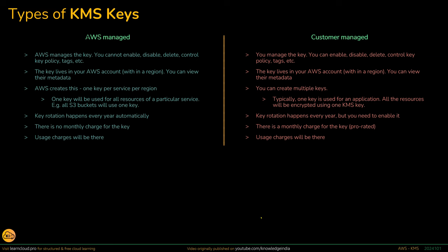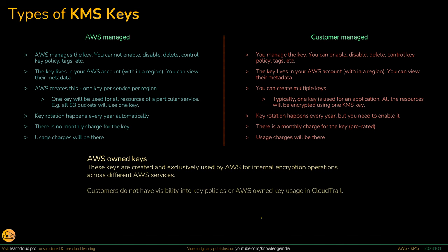Those are the two major types of keys. But there is one more type you need to know: AWS owned keys. These are internal keys not visible to you — you cannot see them in the console. AWS owns and maintains them, and sometimes uses these AWS owned keys to do encryption of certain services. This is the one used in case of the S3 SSE-S3 option, which is now the default option. That option uses a key which is AWS internal or AWS owned — you will never be able to see that key in your account and you cannot manage it at all.